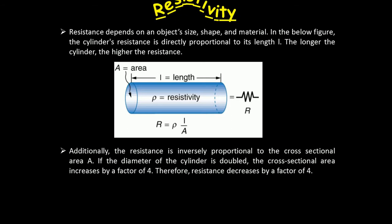Additionally, the resistance is inversely proportional to the cross-sectional area A. If the diameter of the cylinder is doubled, the cross-sectional area increases by a factor of 4, therefore resistance decreases by a factor of 4.